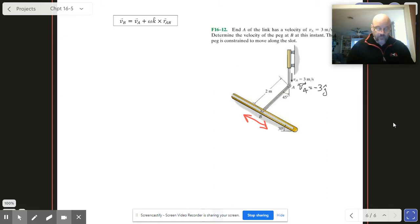Then we've got our location vector RAB. So RAB is going to be minus 2 cosine 45 I hat minus 2 sine 45 J hat. Let's plug it in and do our magic, or rather let the equation do its magic.